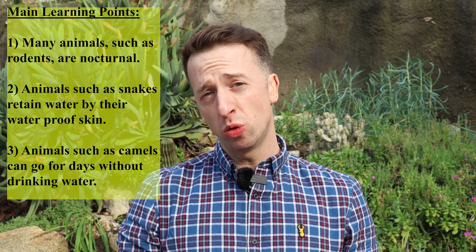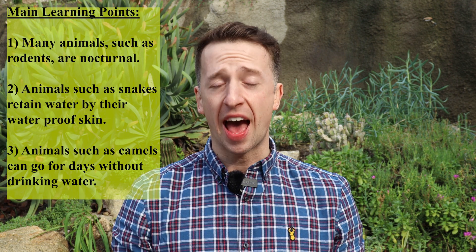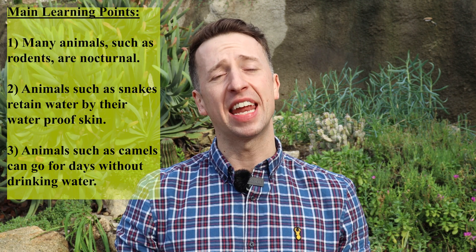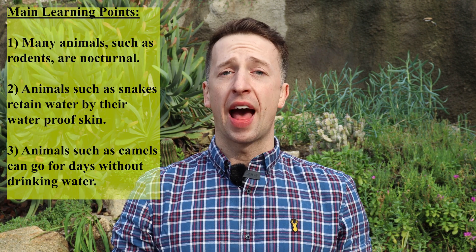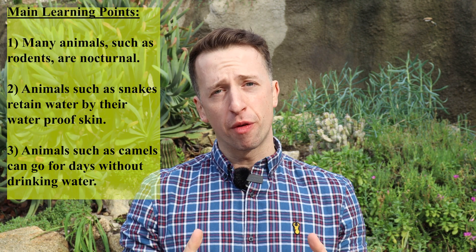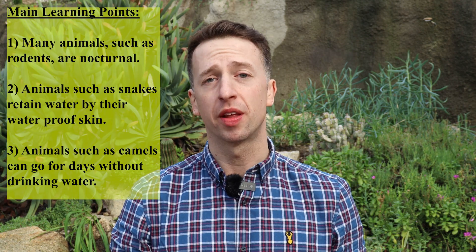The fascinating animals of our global hot deserts have found ways to survive what can only be described as environmentally harsh conditions. Three of the main ways animals have adapted are: number one, many animals, such as rodents, are nocturnal, where they will sleep underground during the day and at night time they will come out to hunt and eat, especially when the temperatures are lower; number two, animals such as snakes hold water through their waterproof skin; number three, a number of animals such as camels can go without days without drinking any water at all.